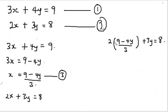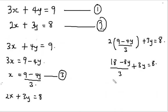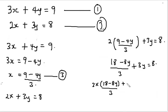Opening the bracket by multiplying through by 2, we get 18 minus 8y divided by 3 plus 3y is equal to 8. Multiplying every term by 3 gives: 18 minus 8y plus 3y times 3 is equal to 8 times 3.